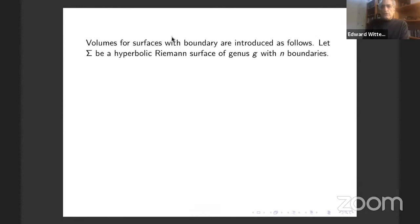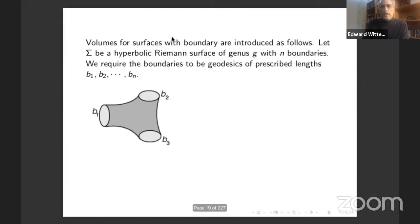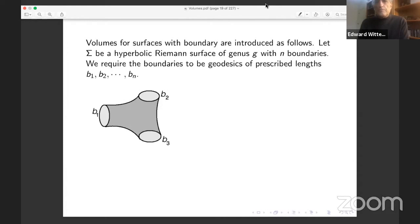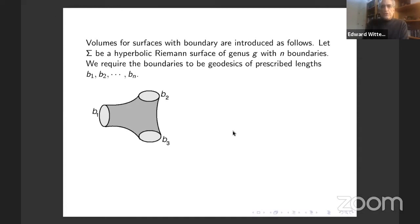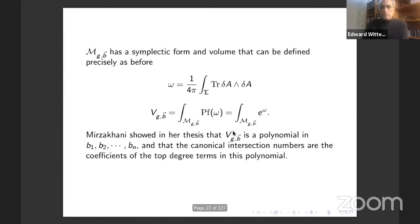We will need volumes for surfaces with boundary. Let Sigma be a hyperbolic Riemann surface of genus G with N boundaries, where we ask the boundaries to be geodesics and specify their lengths. There's a moduli space M_{G,b} of hyperbolic structures with boundaries of specified lengths, and it has a symplectic form and volume defined by the same formulas as before. Mirzakhani showed that these more general volumes are polynomials in the boundary lengths, and the coefficients of the top degree terms are the canonical intersection numbers.